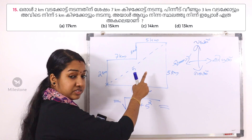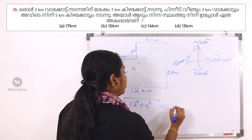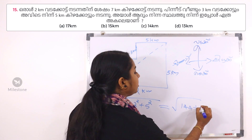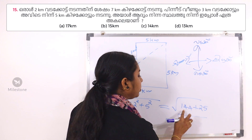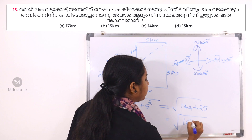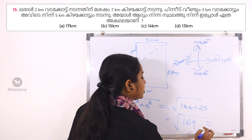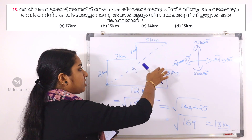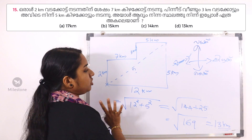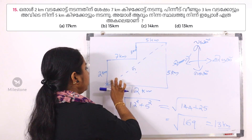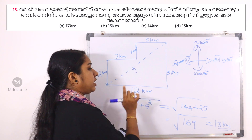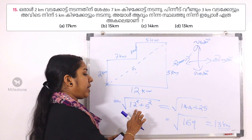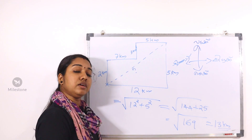The square root of 12 squared plus 5 squared equals the square root of 169, which is 13 km. You can also write it as the square root of 10 squared plus 5 squared for an intermediate step. That gives us the final distance answer.